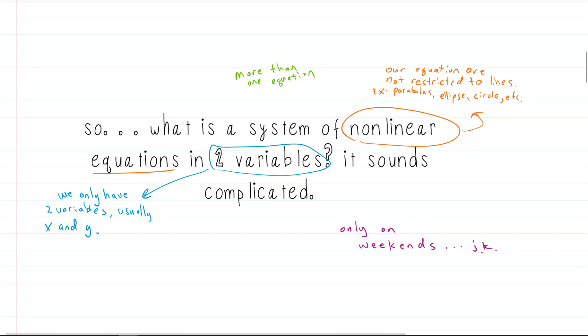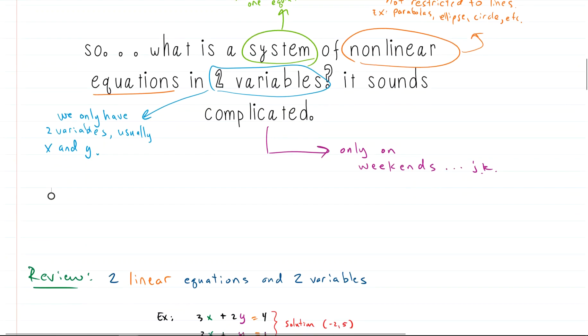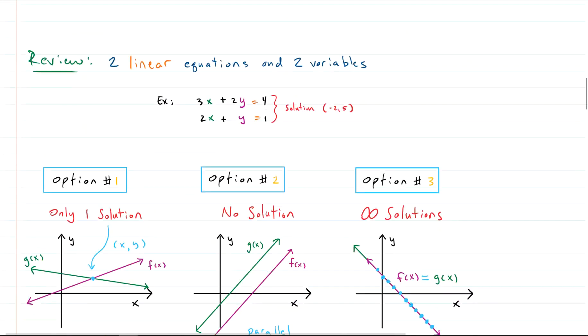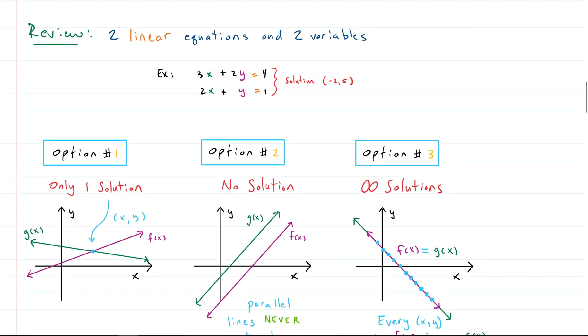And system—what does a system mean? System just means we have more than one equation that we're dealing with. These equations are in two variables, meaning we have just two variables in them. So we'll have two equations, two variables. Not bad.